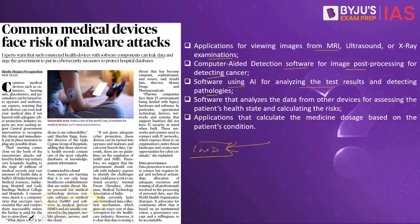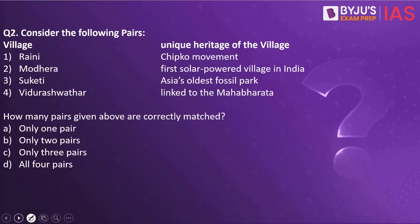Consider the following pairs of village and unique heritage: Raini — Chipko movement; Modera — first solar-powered village in India; Sukethi — Asia's oldest fossil park is present in this village; and Vidurashtu — linked to the Mahabharata. How many pairs given above are correctly matched? The answer to this is all four pairs.